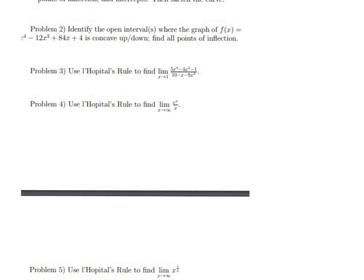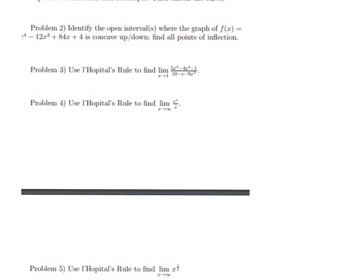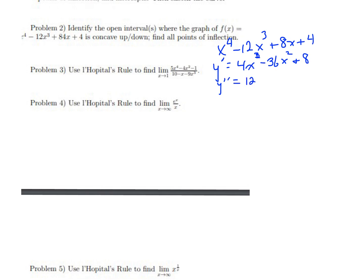For problem 2, we're asked to identify the intervals after finding the points of inflection. The function is x⁴ − 12x³ + 8x + 4. We want to go to the second derivative. The first derivative is 4x³ − 36x² + 8, and then the second derivative is 12x² − 72.